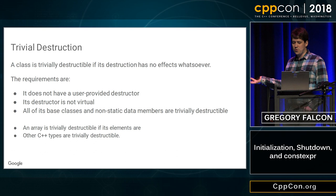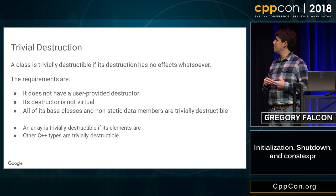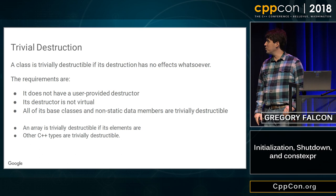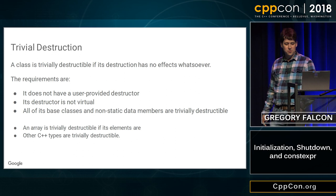Trivial destruction — I'm not going to go through example slides because it's basically exactly the same as before. If you have any sub-members that aren't trivially destructable, you're not trivially destructable. You can have virtual member functions and be trivially destructable, you just can't have a virtual destructor. And all of the built-in C types and arrays of built-in C types and arrays of trivially destructable objects are automatically trivially destructable themselves.